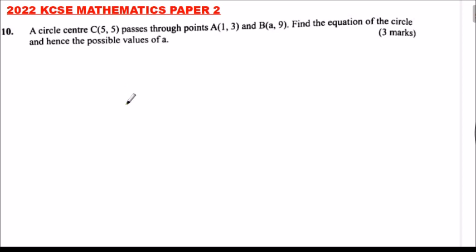We have been given the circle. When the center of the circle is at the origin, we say r squared equals x squared plus y squared. But now the center of the circle is not at the origin, so we use a different form.